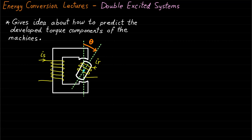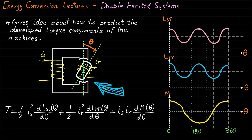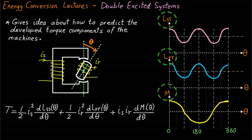In the previous two lectures, we have explained the behavior of the inductances and we have derived the total torque expression of this system. This double-excited system has a special structure or geometry that makes the stator self-inductance, the rotor self-inductance, and the mutual inductance change with respect to rotor position as shown.